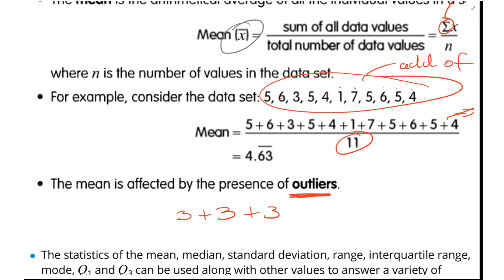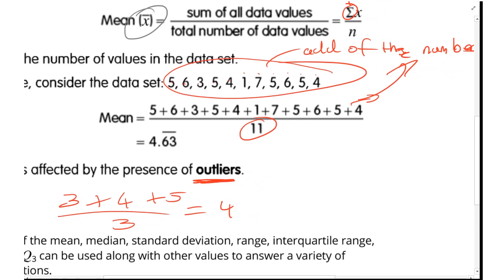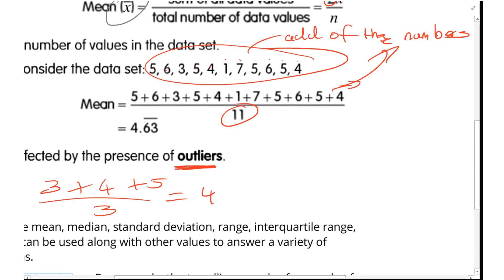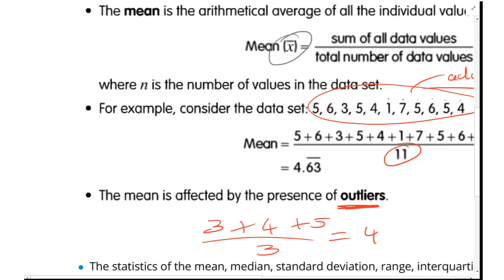us 4. So 3 plus 4 is 7, plus 5 is 12, 12 by 3 is 4. Now imagine I've got an outlier. This would be my mean. Now imagine my mean is still 3 plus 4 plus 5, but I add 20 on. So now...